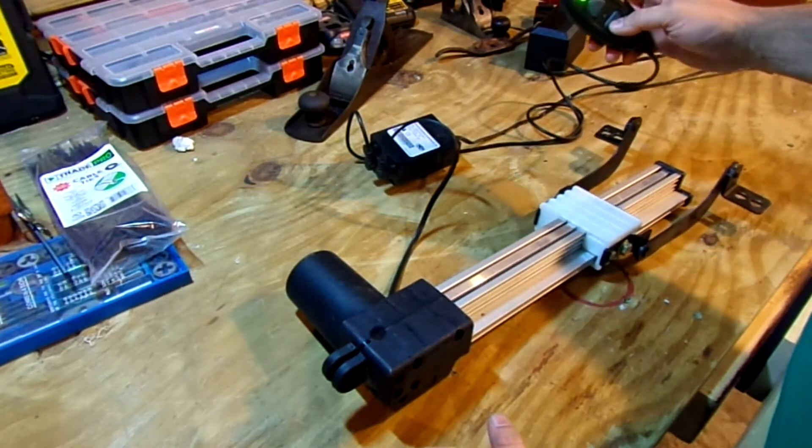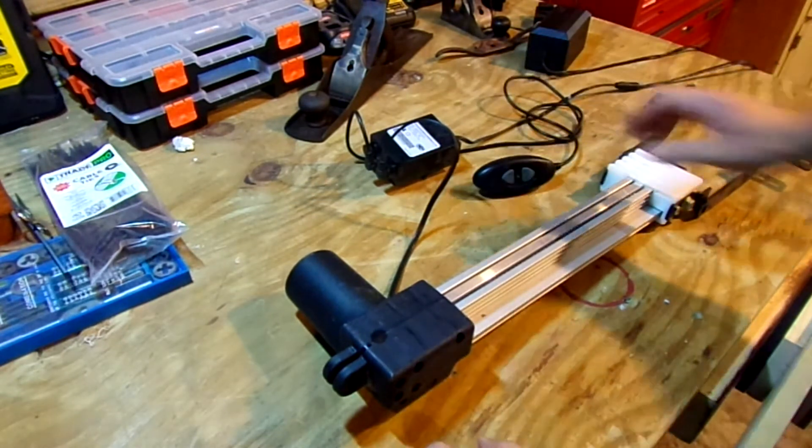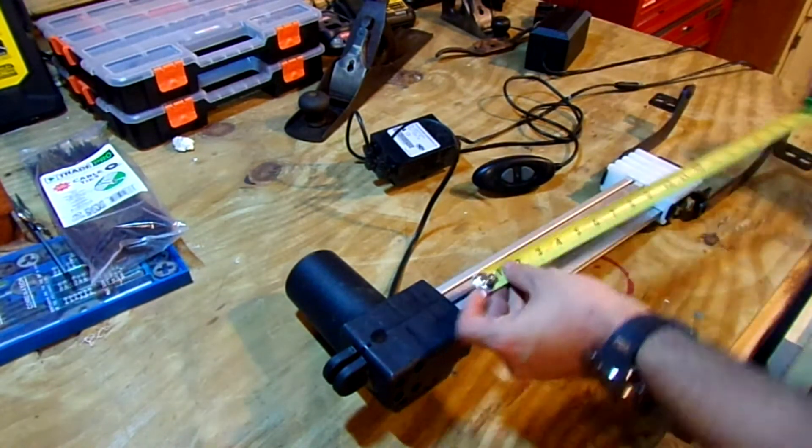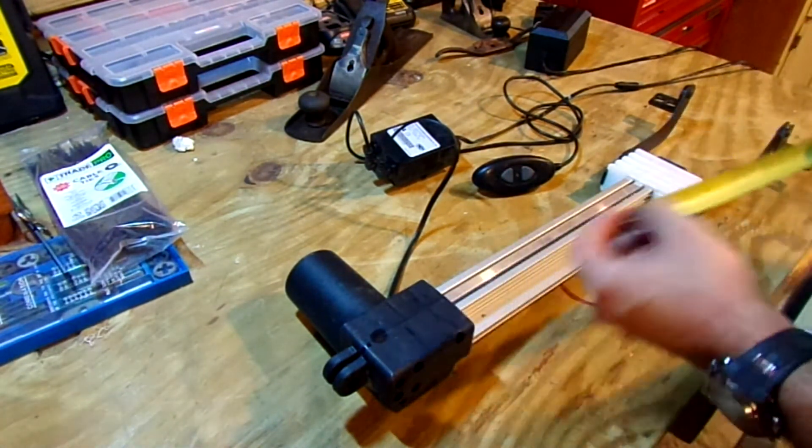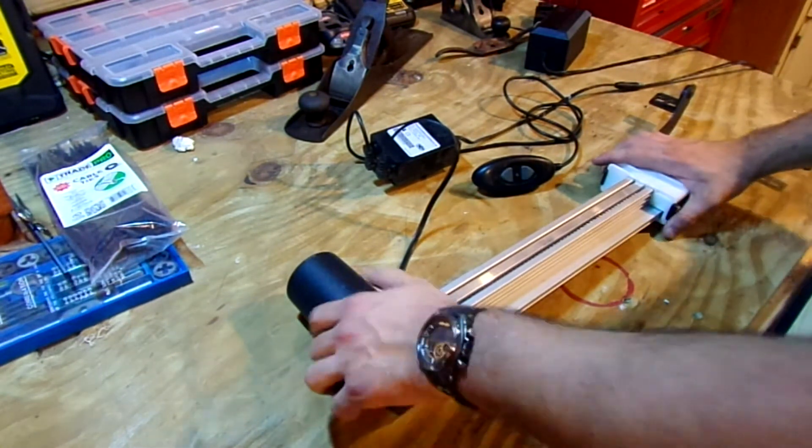And it's got a decently long stroke. It's the full length of this track which is 16 inches. So it's got a 16 inch stroke. Like I said, it's 24 volts. It's a 24 volt DC motor.